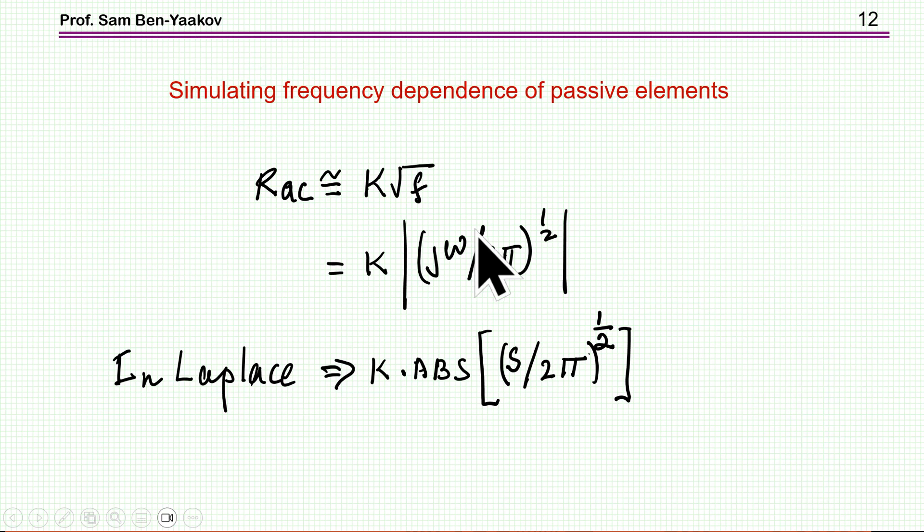Now, the question is, how can I make the passive element frequency dependent? Now, let's have a look at RAC. RAC can be approximated by this function. This is some coefficient here, times the square root of the frequency. And, therefore, what we need here is to have the absolute value, because we don't want any phase shifts here. So, we need the absolute value of j*omega, and I'm dividing it by 2*pi, in order to get actual frequency. And, in the Laplace realization, it will be s over 2*pi, square root, and absolute value.